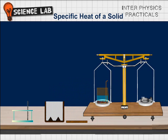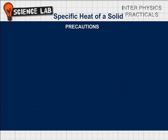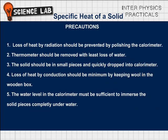Precautions: 1. Loss of heat by radiation should be prevented by polishing the calorimeter. 2. Thermometer should be removed with least loss of water. 3. The solid should be in small pieces and quickly dropped into calorimeter. 4. Loss of heat by conduction should be minimum by keeping wool in the wooden box. 5. The water level in the calorimeter must be sufficient to immerse the solid pieces completely underwater.